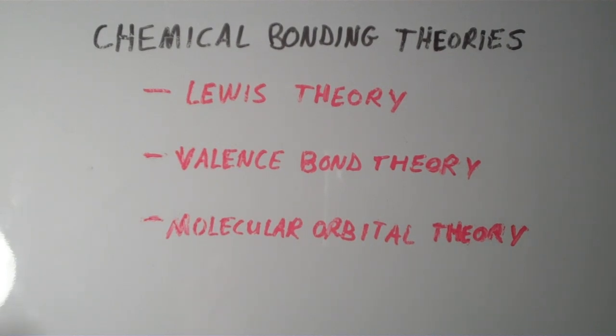Alright, so this video is going to be a basic, from the ground up, type of introduction to chemical bonding theories. So the three main chemical bonding theories that we use in general or even organic chemistry are Lewis theory, valence bond theory, and molecular orbital theory.